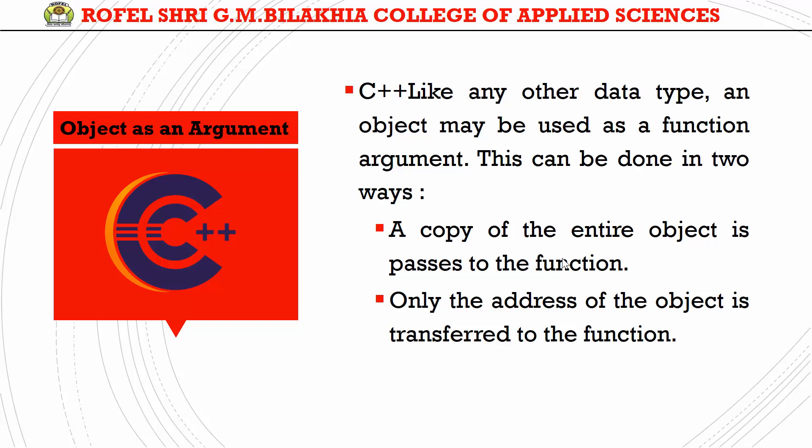In pass by reference, changes happen on the actual object. A function can also return an object either by value or by reference. When an object is returned by value from a function, a temporary object is created within the function which holds the return value, and this value is further assigned to another object in the calling function.